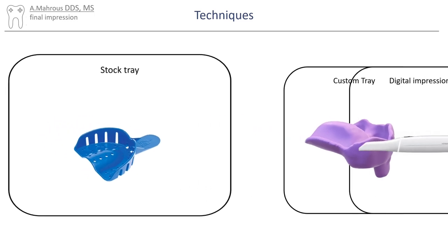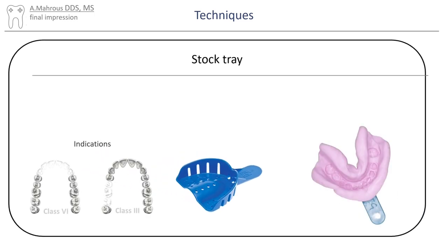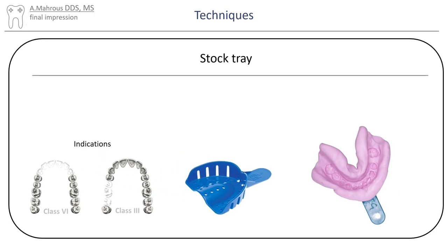Let's start with the stock tray. They are generally used to make impressions for cases with short span bounded saddles, like short span class 3s and 4s.